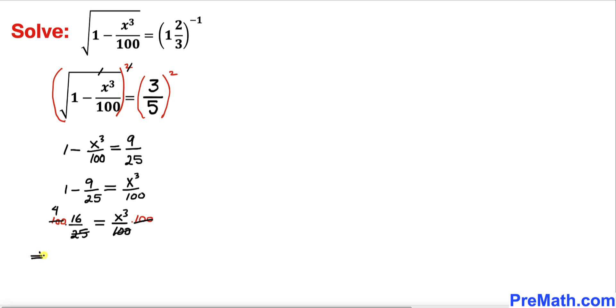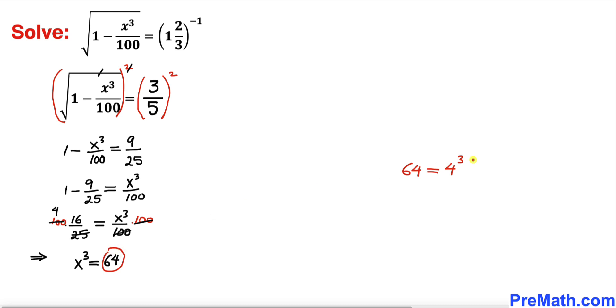Let's focus on this 64. 64 could be written as 4 cubed. So therefore we can write our equation as x cubed equals 4 cubed.